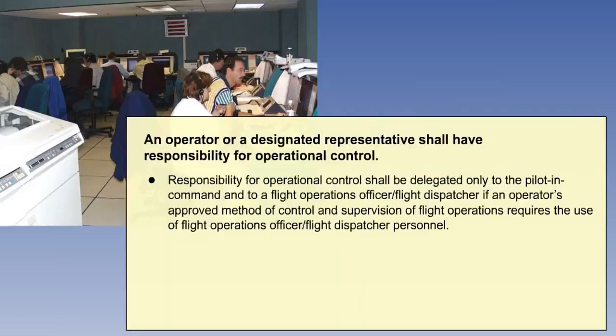In terms of operational control, the operator is ultimately responsible. However, in a large operation like an airline, the operator may not have the required technical knowledge and skills. Therefore, an operations department will be created under the direction of an individual — the so-called designated representative. This department will usually consist of the crew and operations personnel, including operations officers and flight dispatchers.